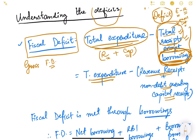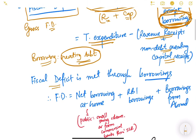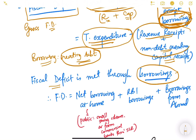Borrowing means you are creating debt, so non-debt creating capital receipts are considered here and borrowings are left apart. The fiscal deficit is essentially made through borrowings. Whatever total expenditure there is and whatever total receipt there is except borrowing — the difference is made through borrowing. So fiscal deficit is nothing but your total borrowings.